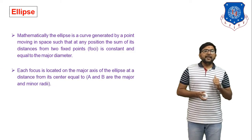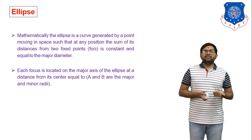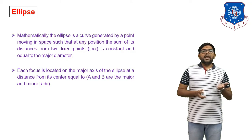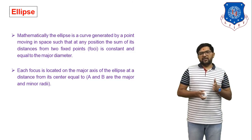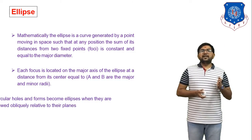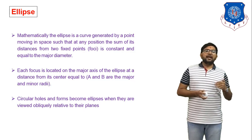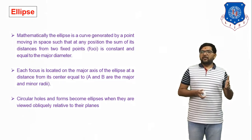Each focus is located on the major axis of the ellipse at a distance from its center, where a and b are the major and minor radius. Circular holes in a form become an ellipse when they are viewed obliquely relative to their plane.